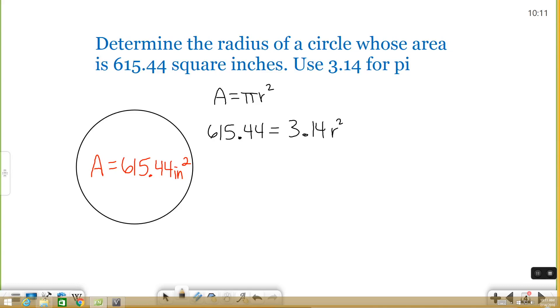615.44 equals 3.14 r squared. So we need to solve for r. We need to get it by itself. So divide both sides by 3.14 and then start simplifying. 615.44 divided by 3.14 is 196 and that equals r squared. Now if you know r squared and you want to figure out what r is, just take the square root of your number. The square root of 196 is 14. And so now you know your radius is 14.